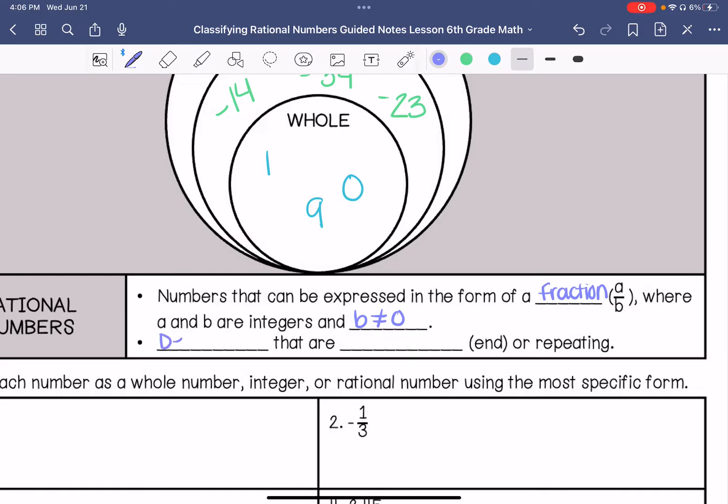Rational numbers can be decimals that are terminating, which means they end, they do not go on forever. For example, pi is not a rational number. Or it's repeating, which means it's repeating the same number or a few numbers.